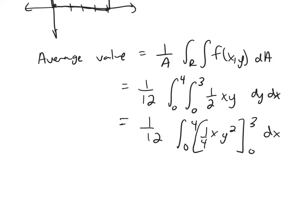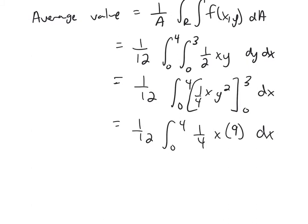So if I plug in 3 for y, you'll get 9. And then if I plug in 0, I get 0. So it looks like I'm getting (1/12) times (9/4).